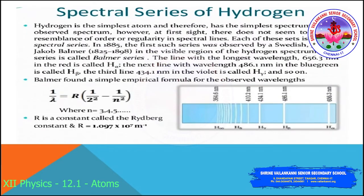We can study the different spectral series of hydrogen. We might expect that the frequencies of light emitted by a particular element would exhibit some regular pattern. Hydrogen, being the simplest atom, has the simplest spectrum. In the observed spectrum, at first sight there does not seem to be any resemblance of order or regularity in the spectral lines.